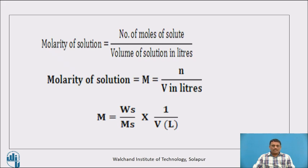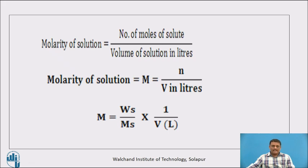Molarity of solution M equals Ws upon Ms multiplied by 1 upon V in litres, where Ws is weight of solute, Ms is molecular weight of solute, and V is volume in litres. The gram mole of the solute is the weight of solute taken divided by the molecular weight of that particular solute.